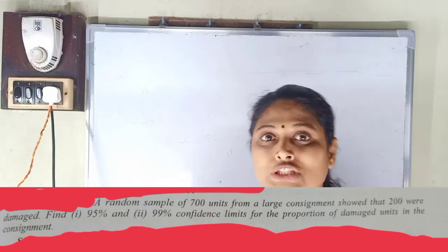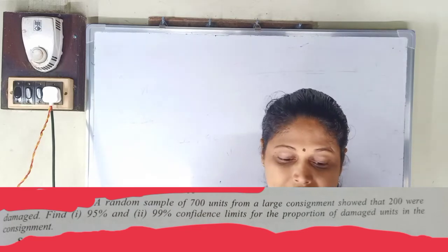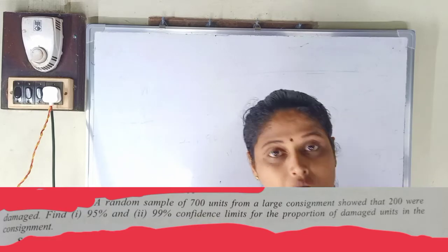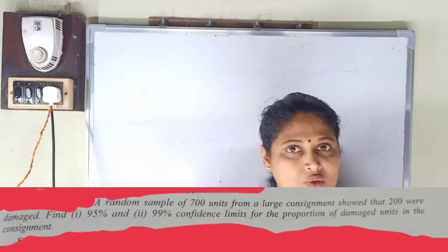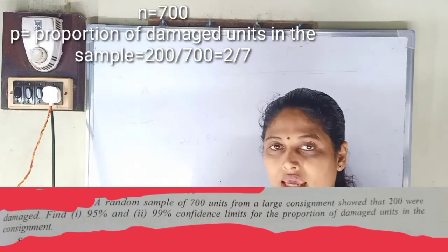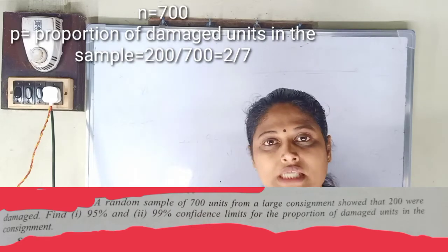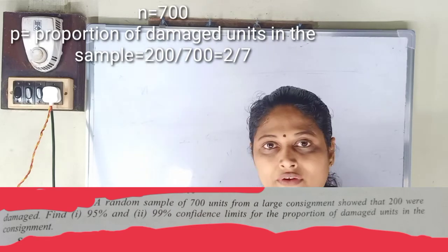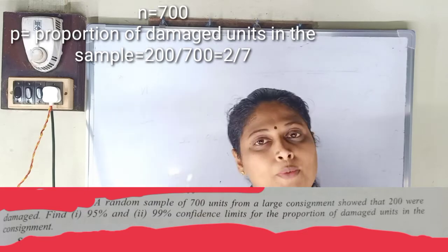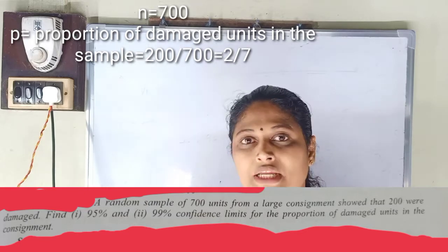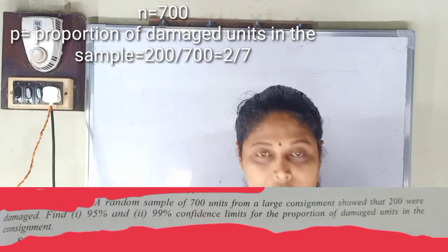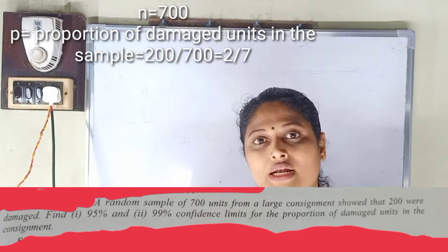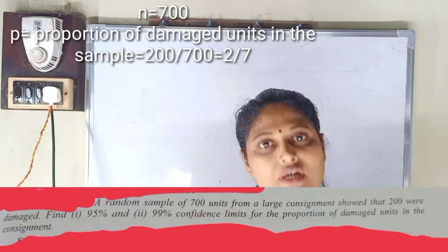In this case, there is a proportion-based problem. In 700 units, 200 were damaged. The sample proportion corresponds to the population proportion, and the standard deviation corresponds to the population parameter.